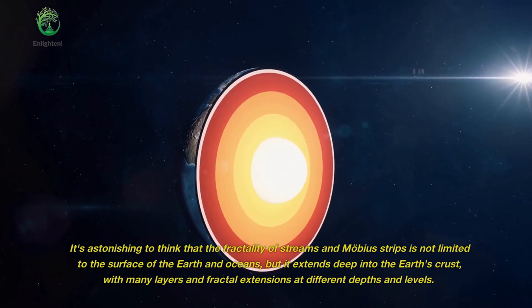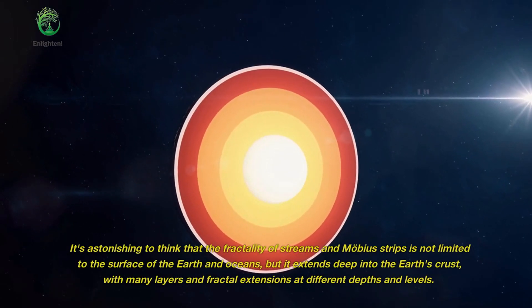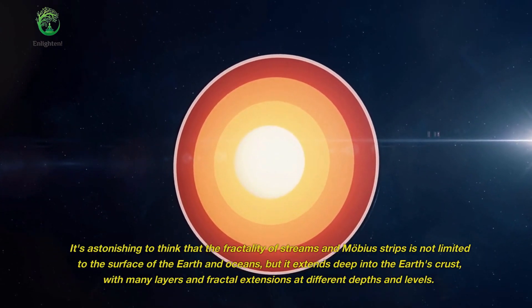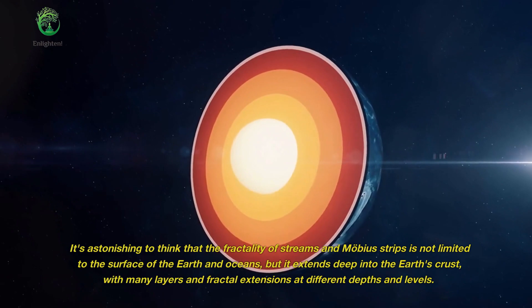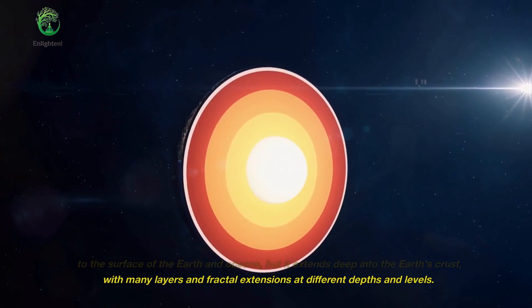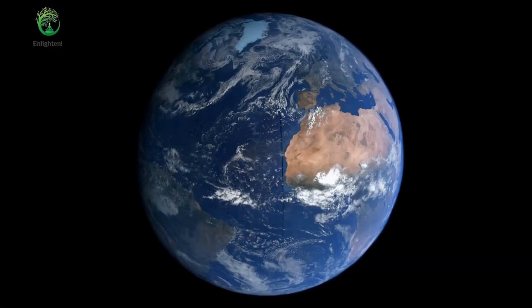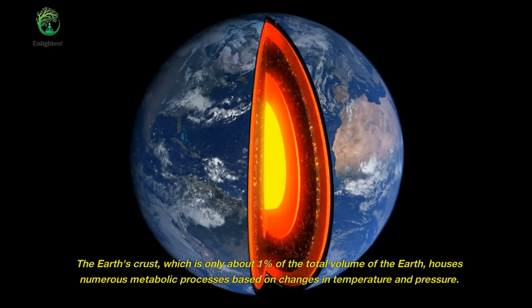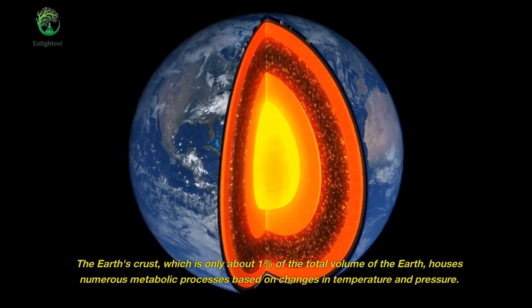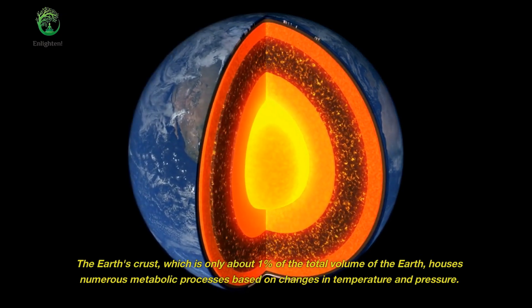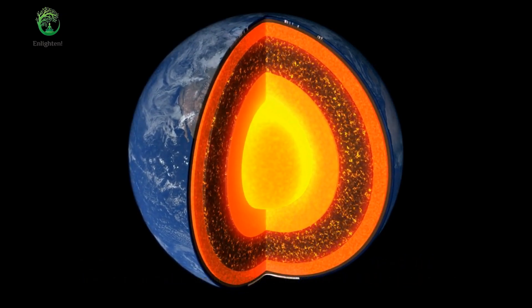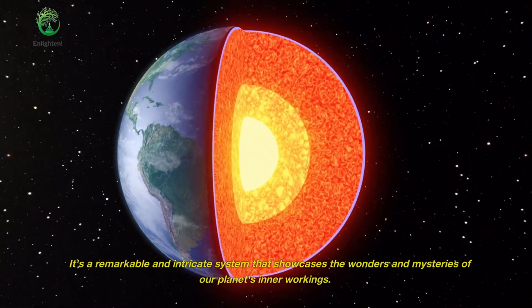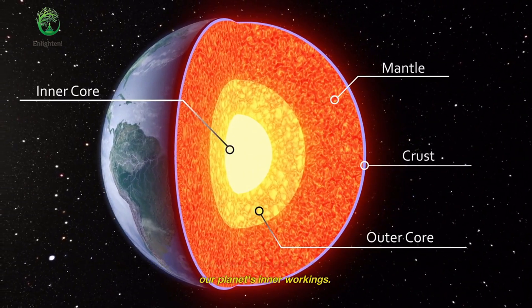It's astonishing to think that the fractality of streams and Mobius strips is not limited to the surface of the Earth and oceans, but extends deep into the Earth's crust, with many layers and fractal extensions at different depths and levels. The Earth's crust, which is only about 1% of the total volume of the Earth, houses numerous metabolic processes based on changes in temperature and pressure. It's a remarkable and intricate system that showcases the wonders and mysteries of our planet's inner workings.